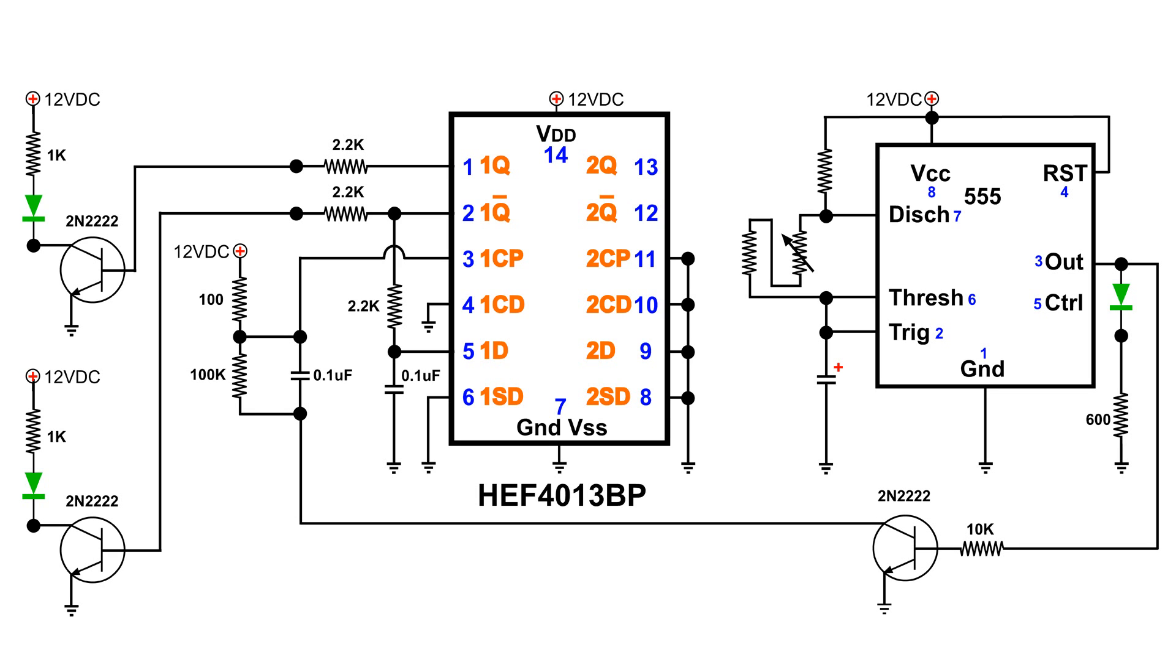I just added an NPN transistor. When the positive pulse comes out of the 555 timer, that turns on the NPN transistor which shorts to ground, clocking the D flip-flop circuit.